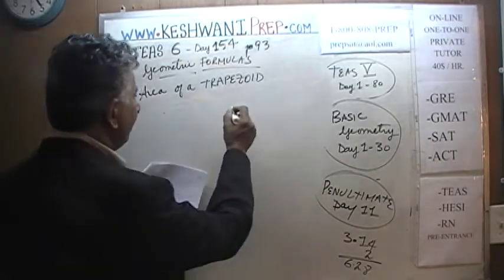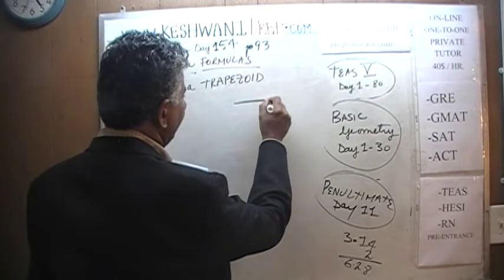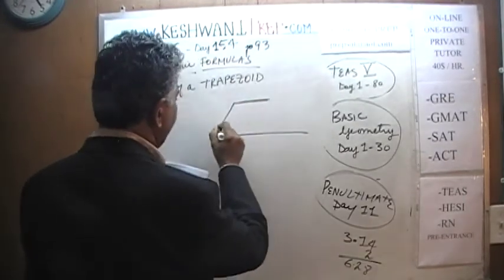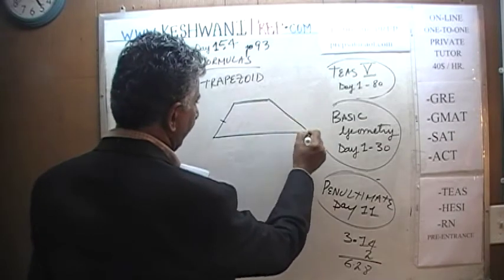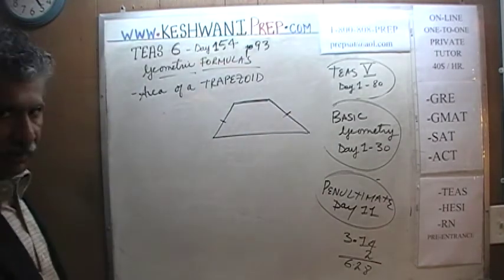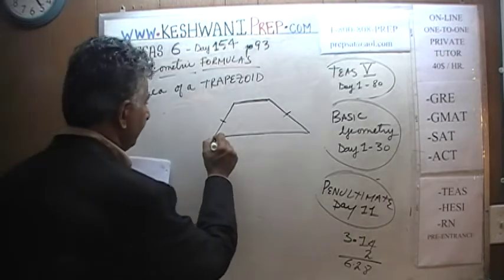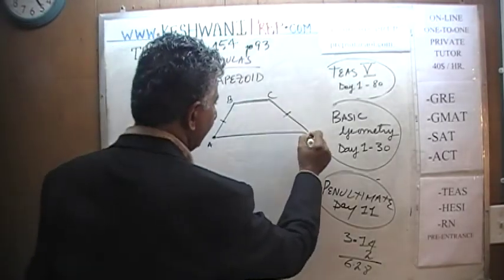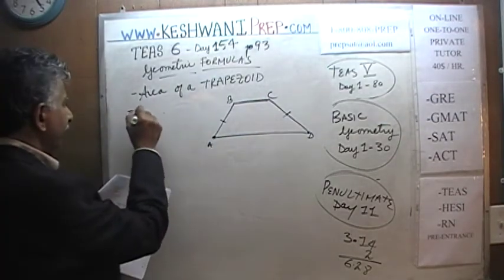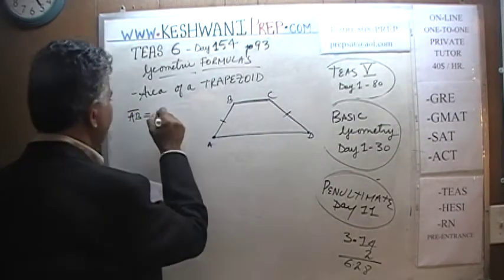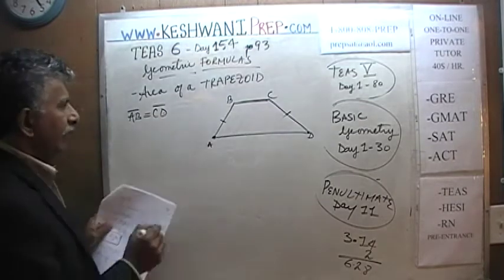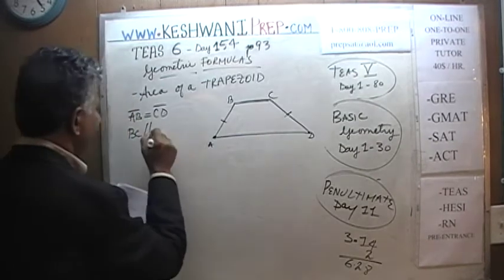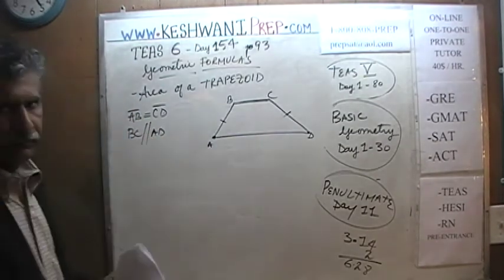Well, it looks something like this. We have a side here, a shorter side here, and a longer side here. This side has to equal that side. If it does not look equal, I am telling you that it is equal. Let's give the vertices the names A, B, C, and D. The length AB is equal to length CD. And line BC has to be parallel to AD. That's the condition.